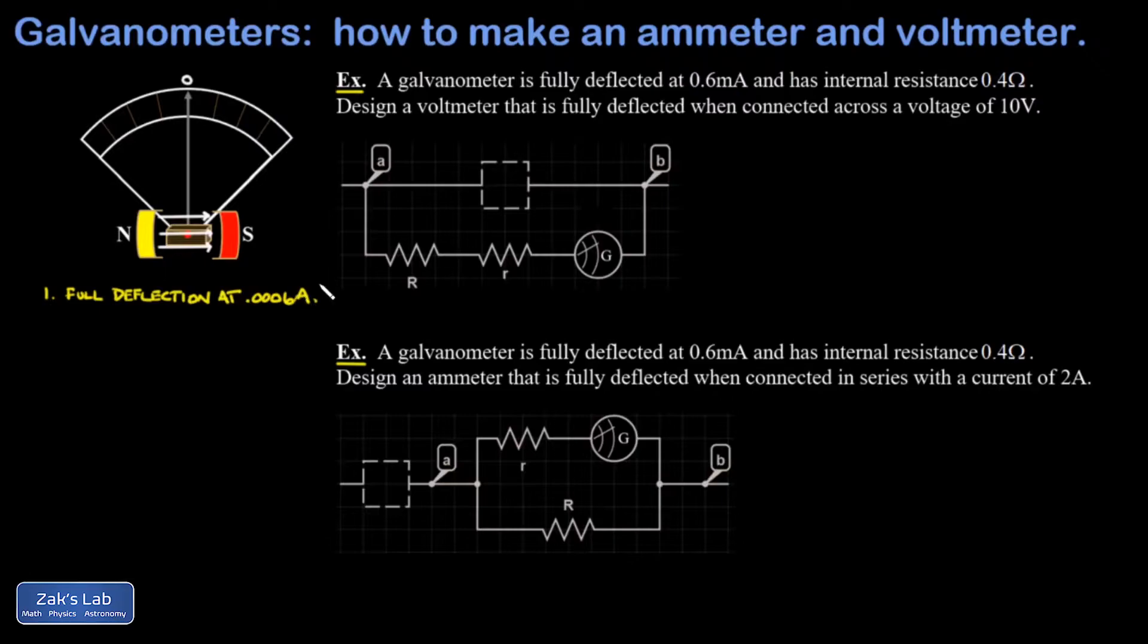First, we're told that the needle reaches full deflection when 0.0006 amps flows through the coils of the galvanometer, in other words, 0.6 milliamps. Second, we're told the galvanometer comes with internal resistance of 0.4 ohms.